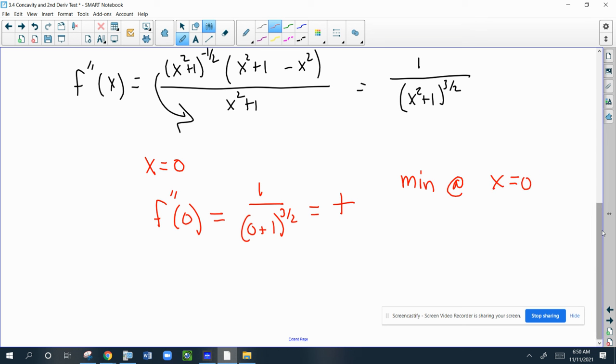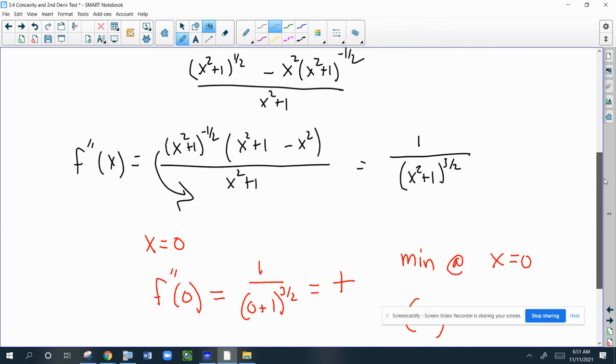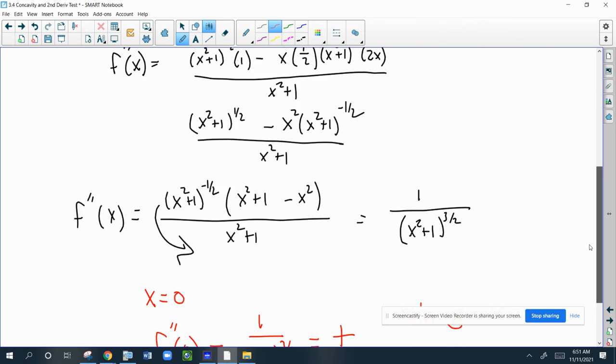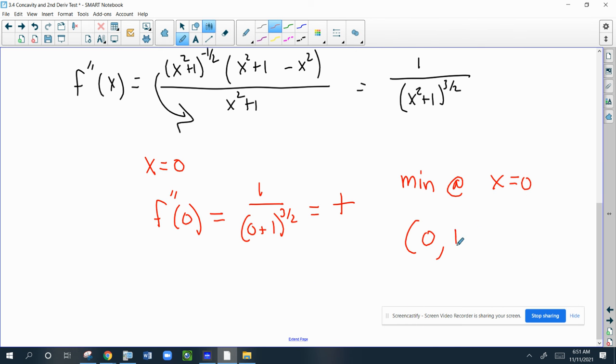We have to determine its Y coordinate. So you plug it into the original function, which is up here. That will get you the square root of one, which is one. And we're done. The only thing left to do is to graph it and make sure the graph agrees, and I'll let you do that. That's it.